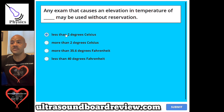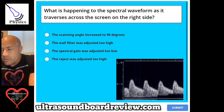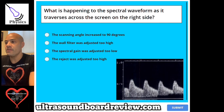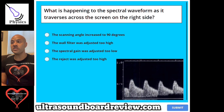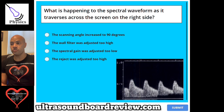Question 80. What is happening to the spectral waveform as it traverses across the screen on the right side? A, the scanning angle is increased to 90 degrees. B, the wall filter was adjusted too high. C, the spectral gain was adjusted too low. Or D, the reject was adjusted too high.